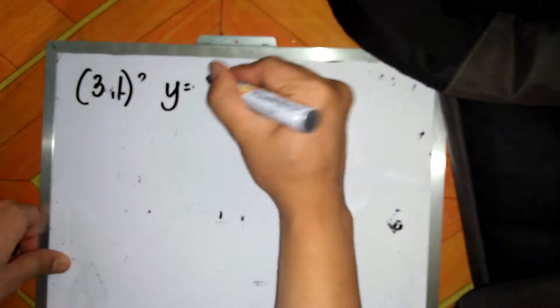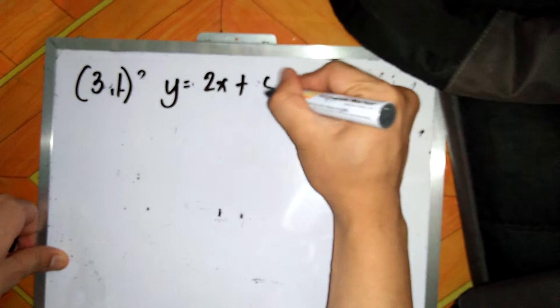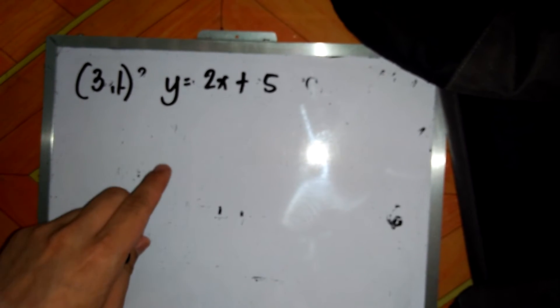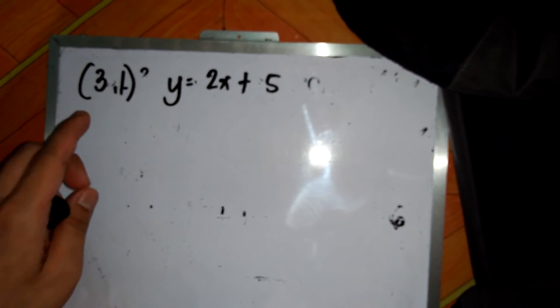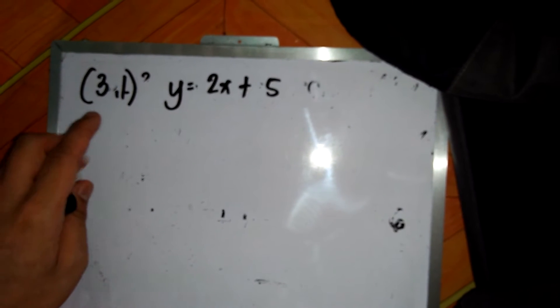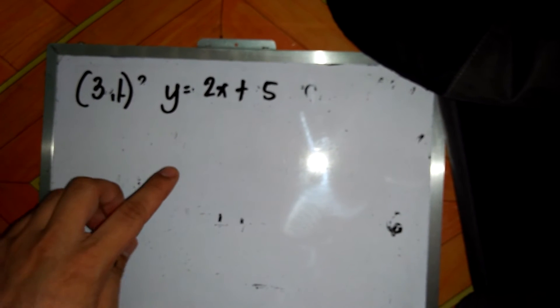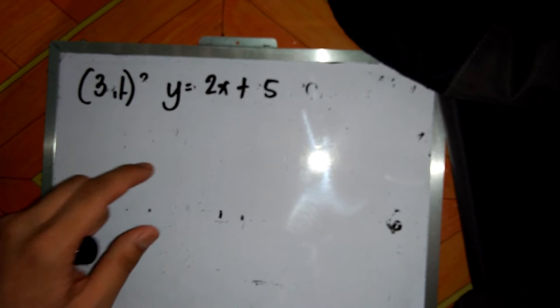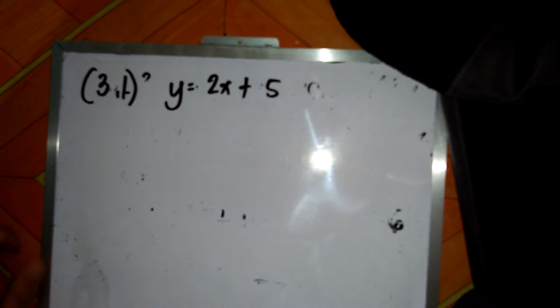To the line y equals 2x plus 5. Since we are asked about the distance, so basically this is distance between a point and a line. So what is the formula for getting the distance between the point and a line?